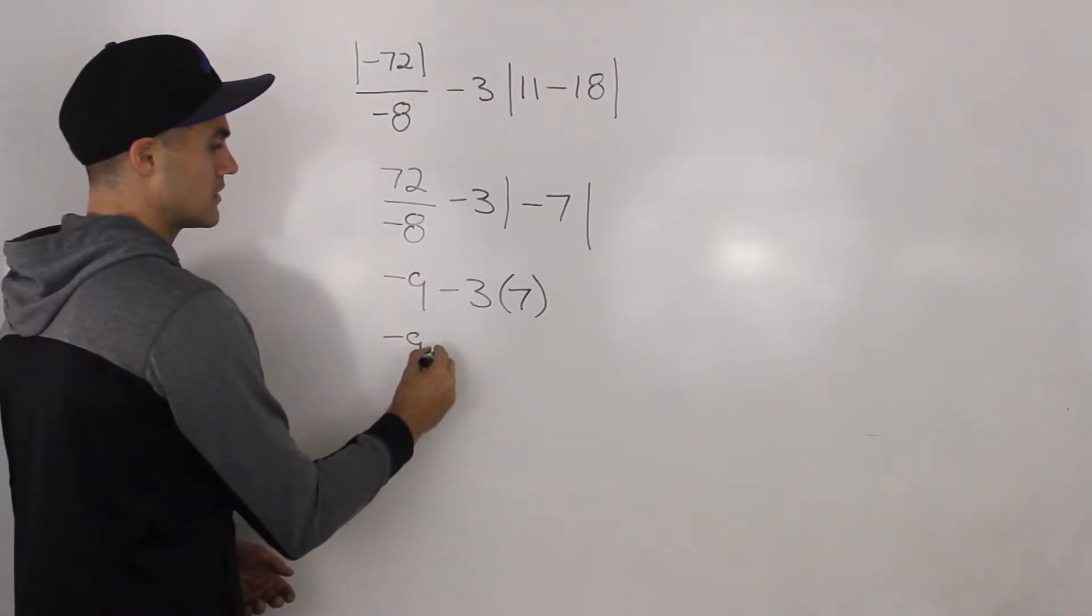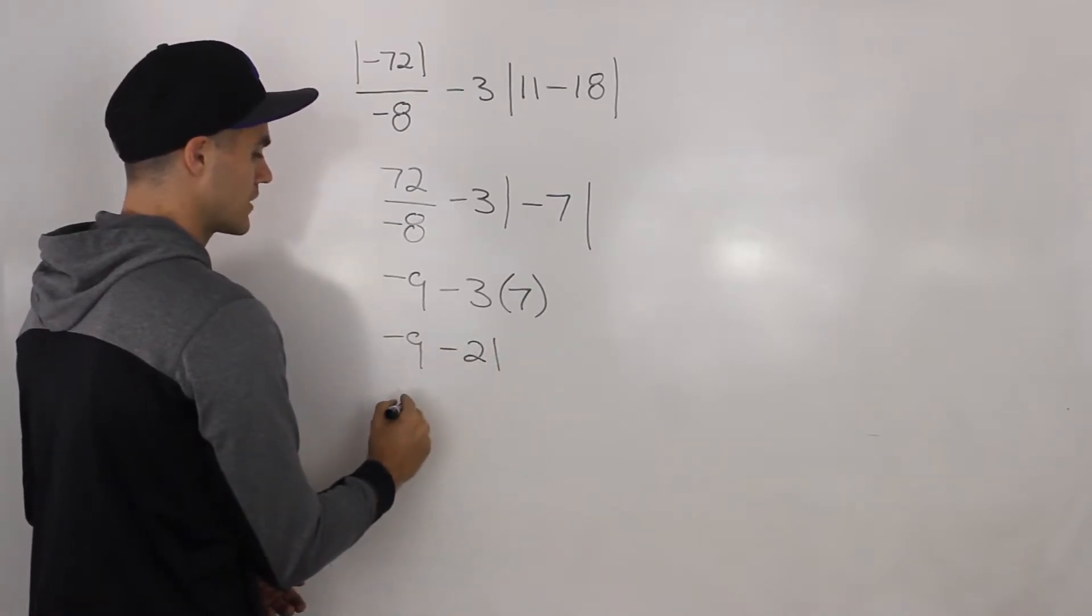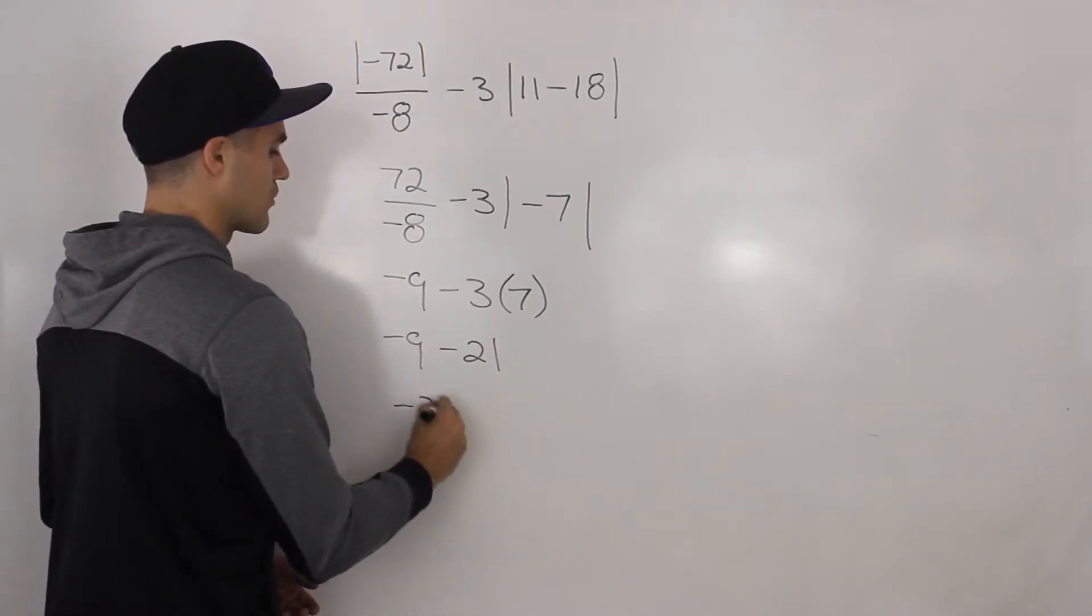Then we have negative 9 minus 3 times 7, which gives us negative 21. Negative 9 minus 21 gives us negative 30.